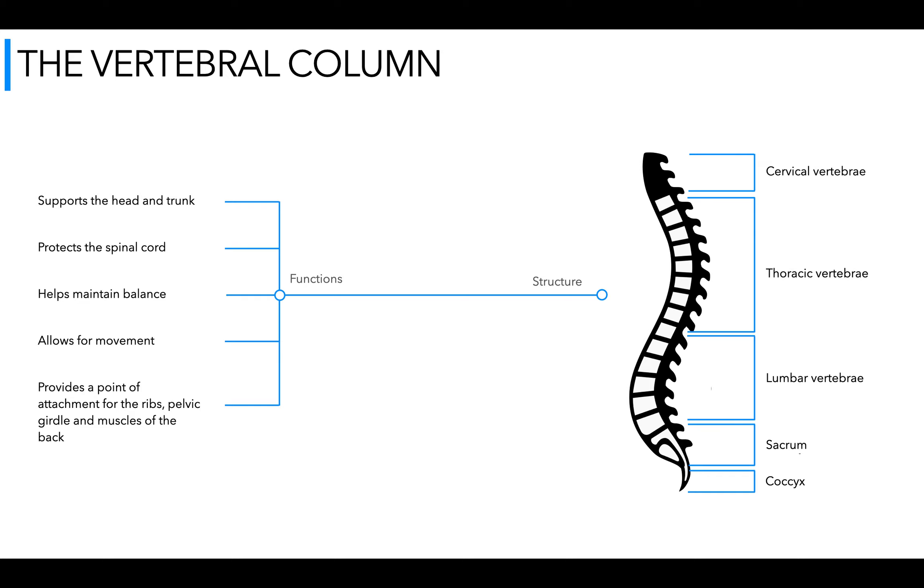As we said earlier it protects the spinal cord. It also helps us maintain balance and it allows for movement. We have movement from a pivot joint, a cartilaginous joint and the gliding joint within the vertebral column. It provides a point of attachment for the ribs, the pelvic girdle and muscles of the back such as the erector spinae. More to come on muscles later in the course in a different video.